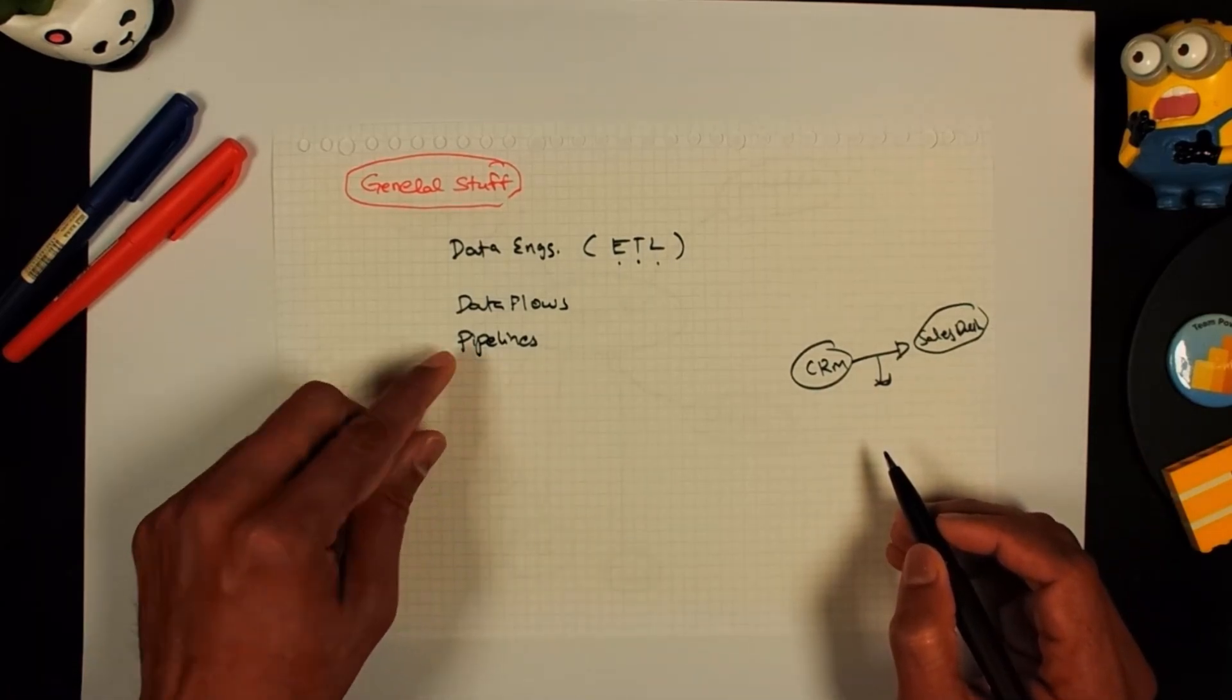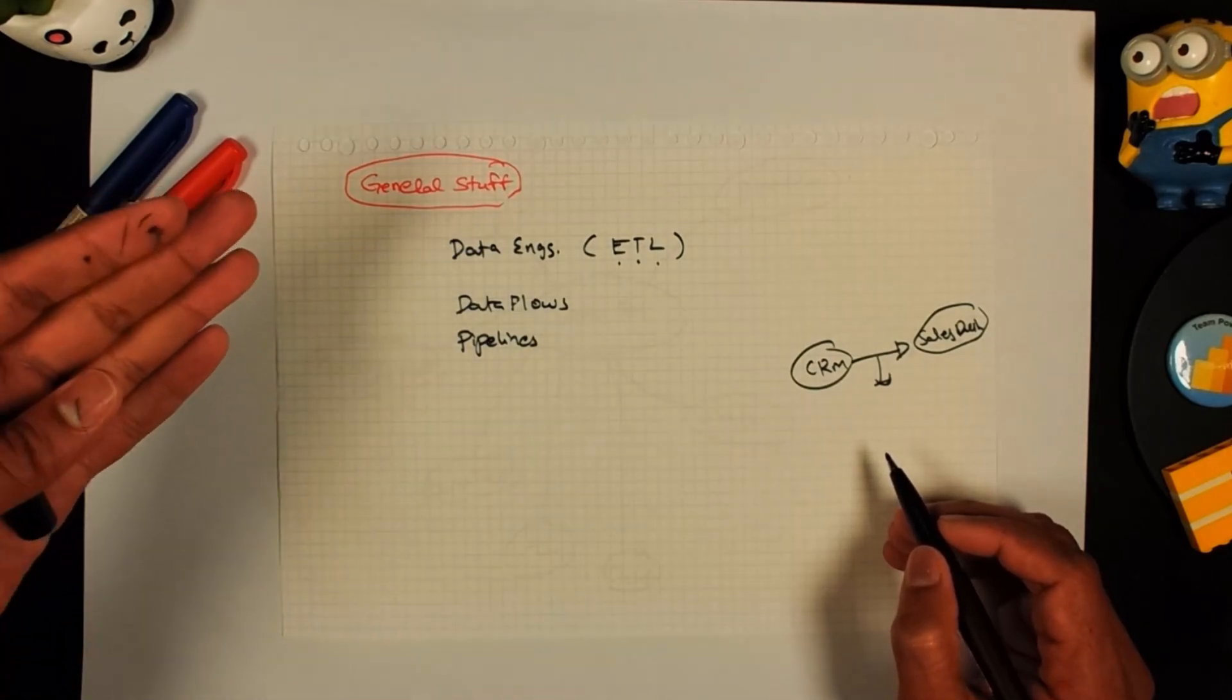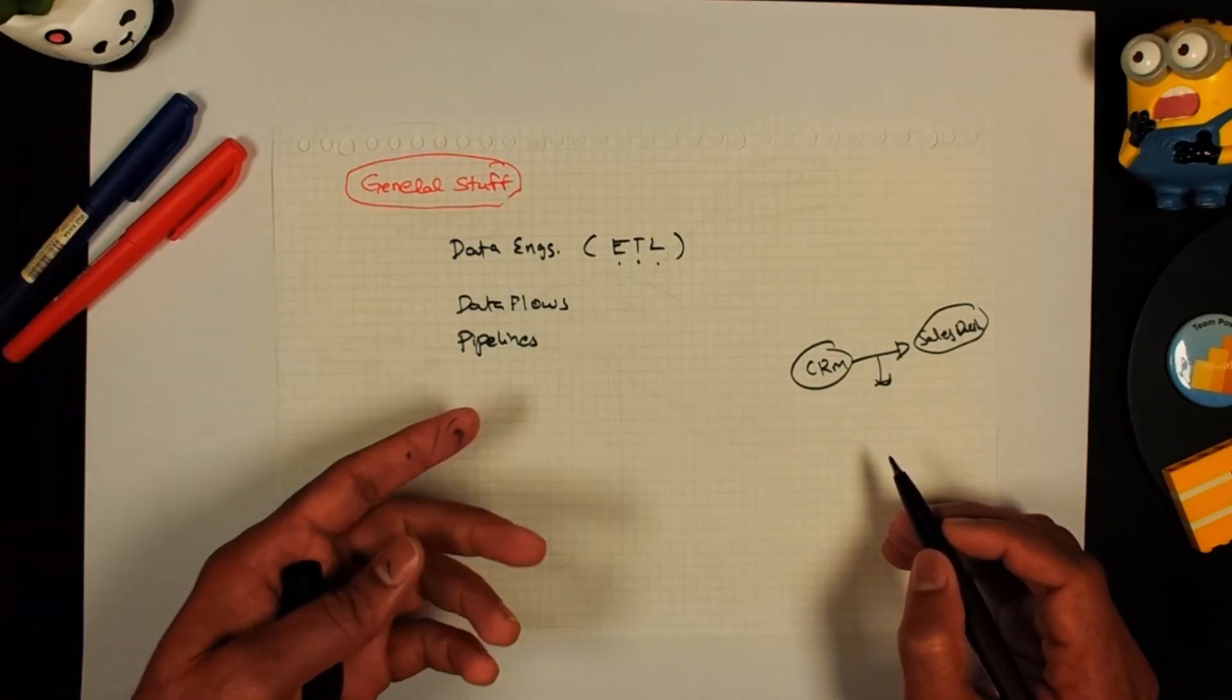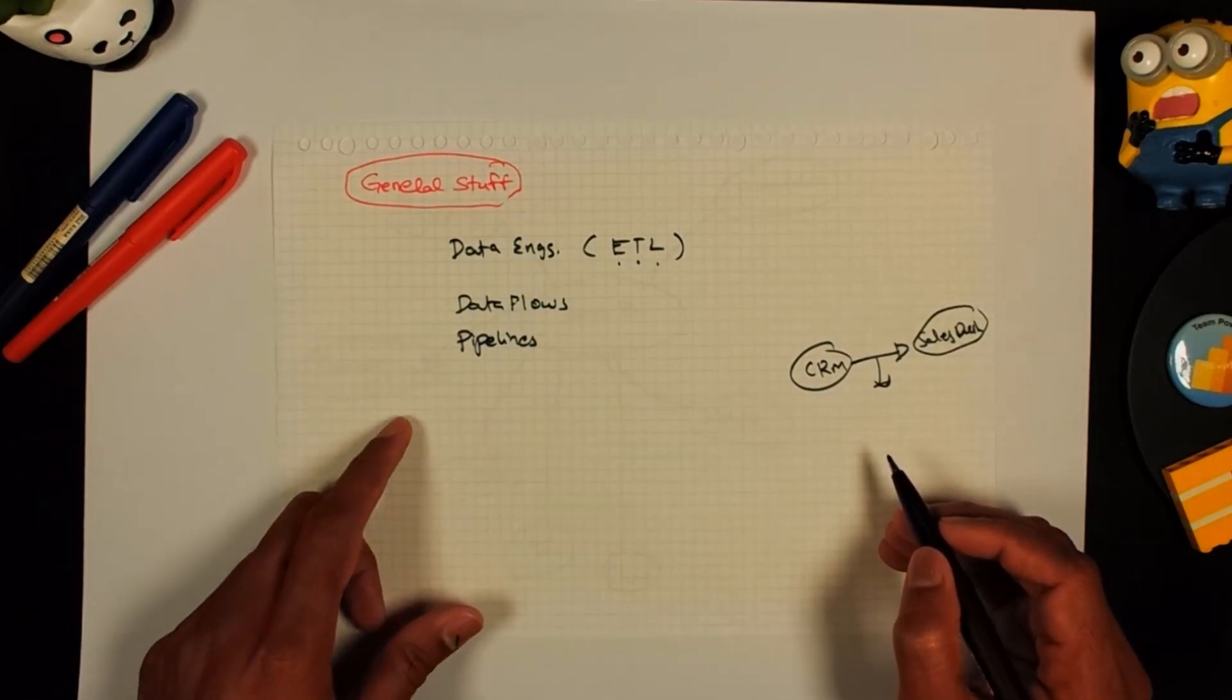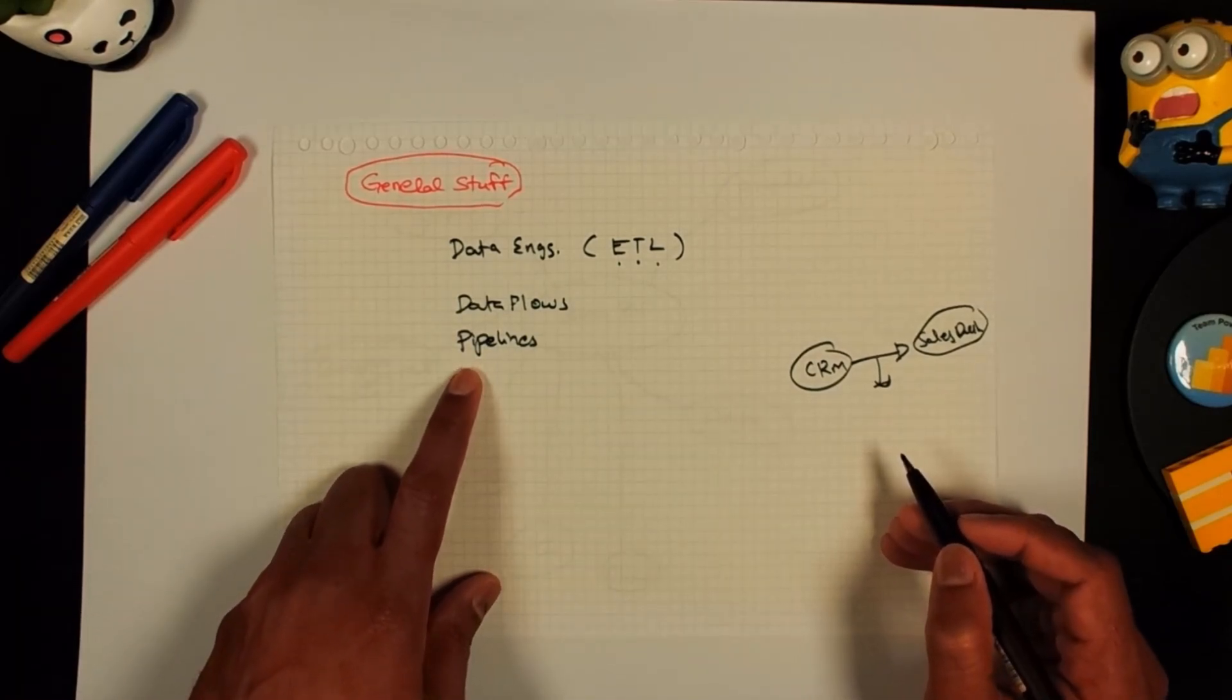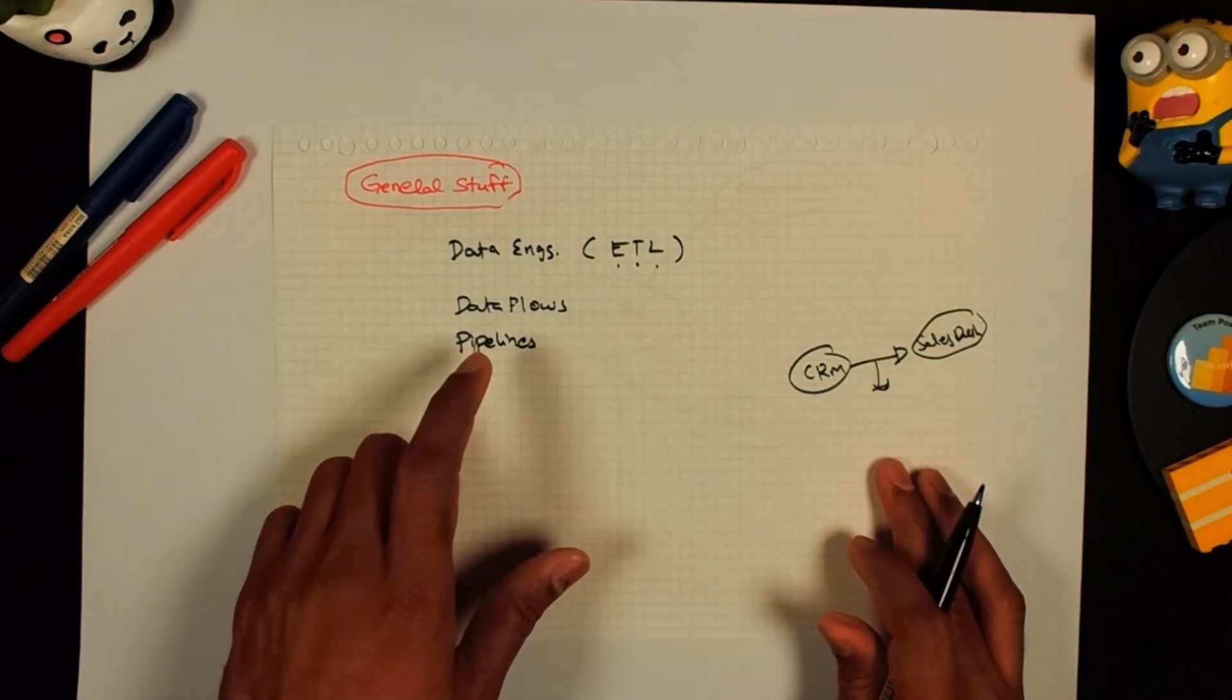Even though this sounds like a technical thing, essentially if you are just connecting to an excel file and removing few columns and splitting the first name in Power Query, you are doing a pipeline but you just don't call it, you just call it as Power Query. Whereas if you are doing it against large systems and lots of data and all of that then this fancy word is used.